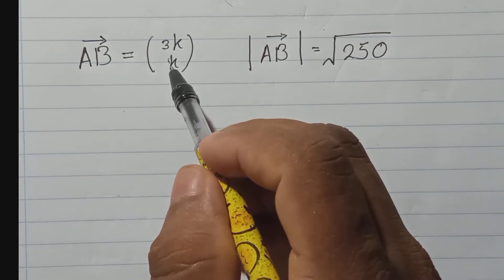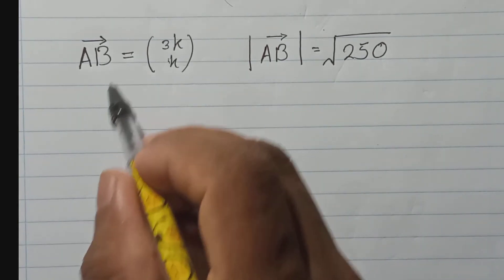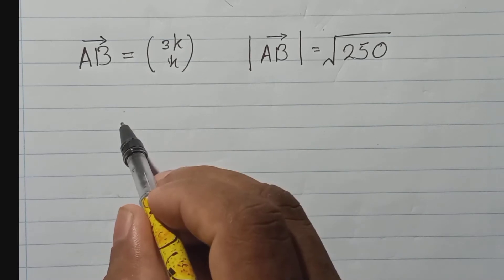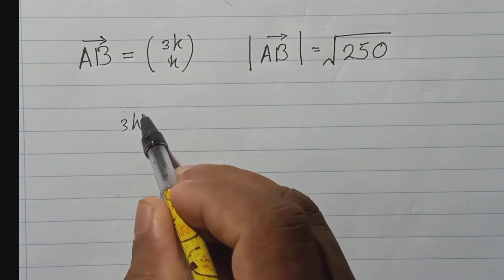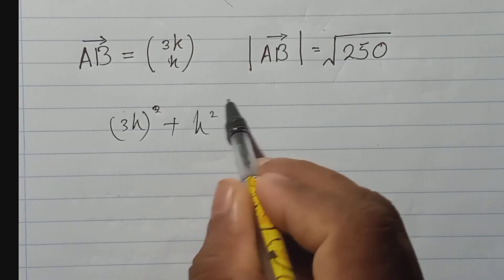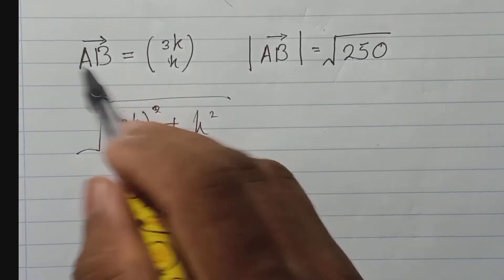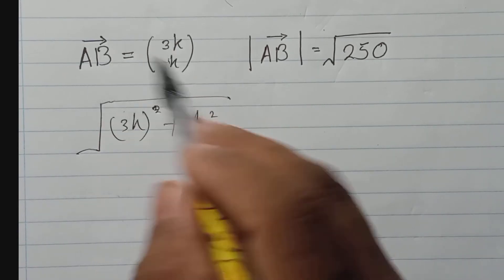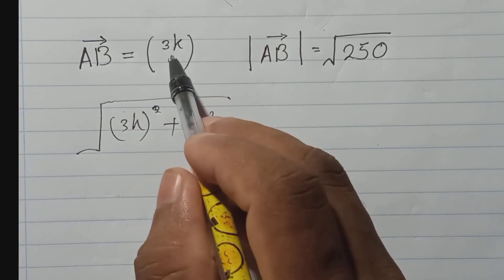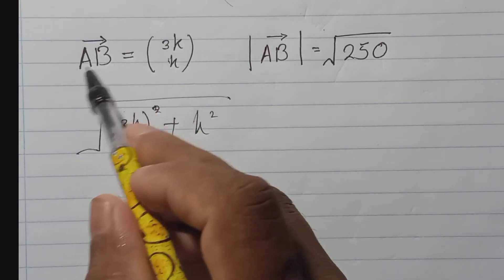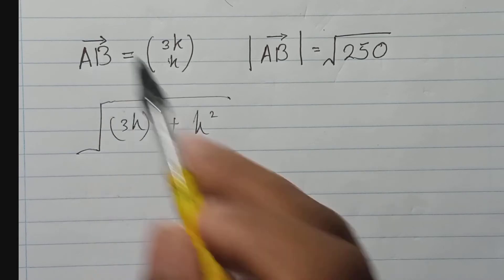So I can write here that the AB magnitude will be 3k square plus k square and square root. When we have like this way column vector, you can use this way always to find the size of this or we can call magnitude of this vector.